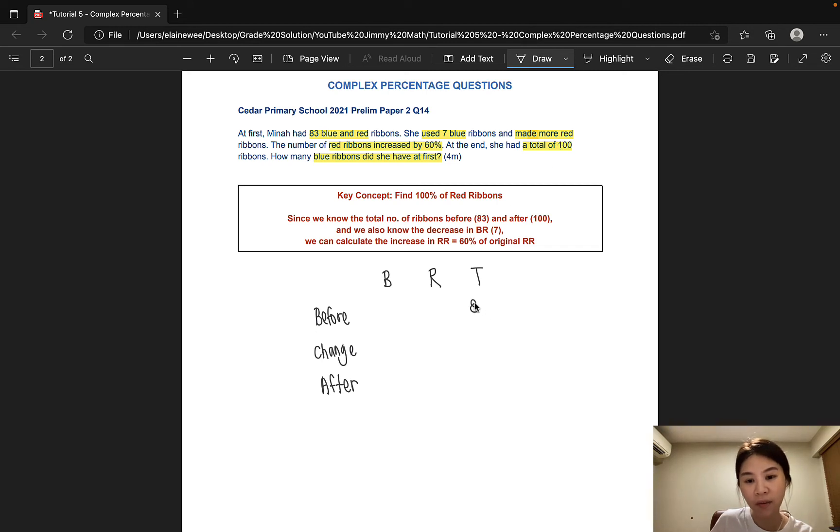So I'll go ahead and fill out the information I have. 83 ribbons before and 100 ribbons after. I do not know how many blue and red ribbons there are individually, so I'll leave those blank. Since 7 blue ribbons were used, I would write minus 7 here. And the number of red ribbons increased by 60%, so I would write plus 60% over here.